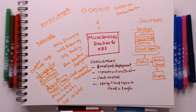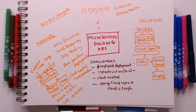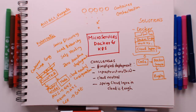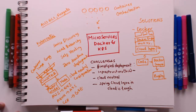Docker and Kubernetes are an amazing combination for microservices architectures. In this video we talked about a wide variety of stuff related to microservices, Docker, and Kubernetes: the challenges of microservices, how Docker helps the microservices architecture, container orchestration, the cloud-specific solution AWS ECS and Fargate, and the cloud-neutral solution Kubernetes.